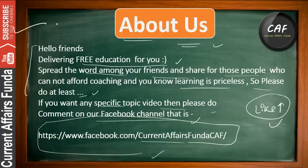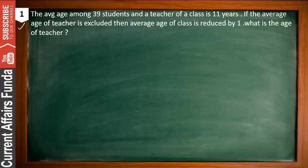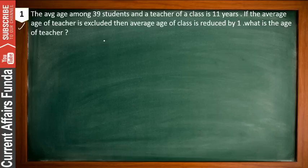Subscribe this channel also. The first question is: the average age among 39 students and the teacher of a class is 11 years. If the average age of the teacher is excluded, then the average age of the class is reduced by 1. What is the age of the teacher? Pause the video and solve this question yourself.